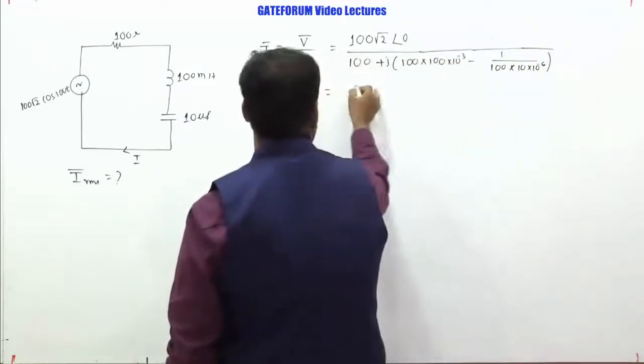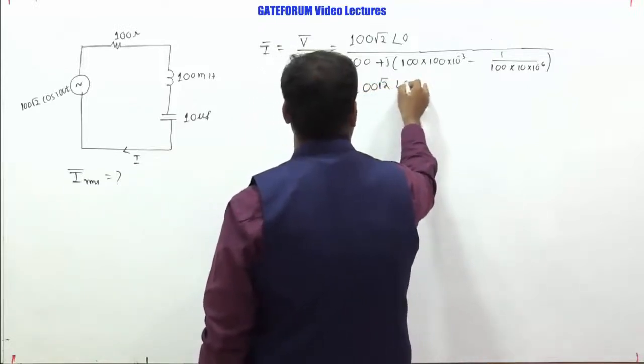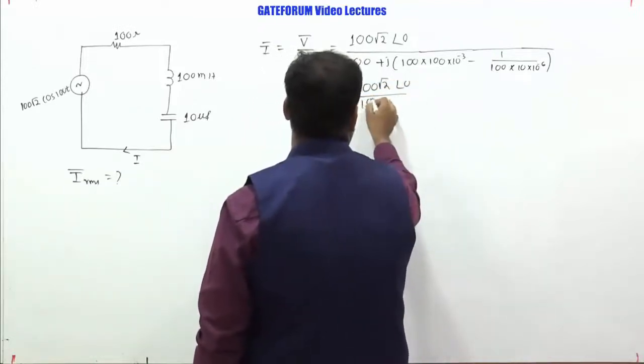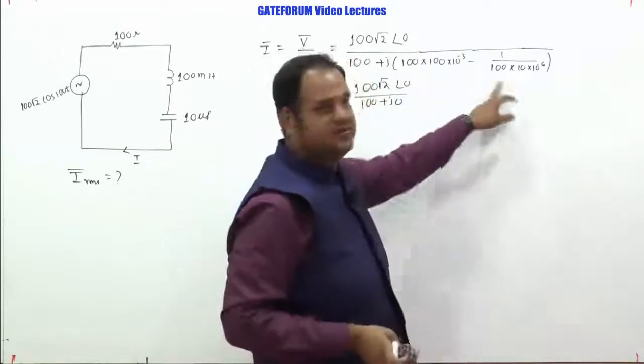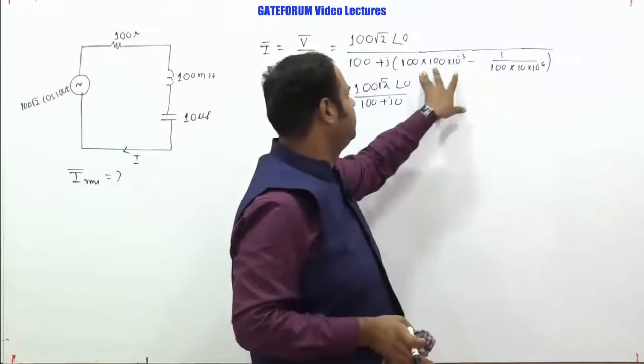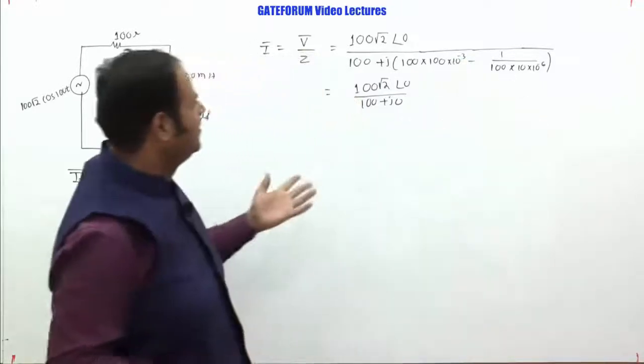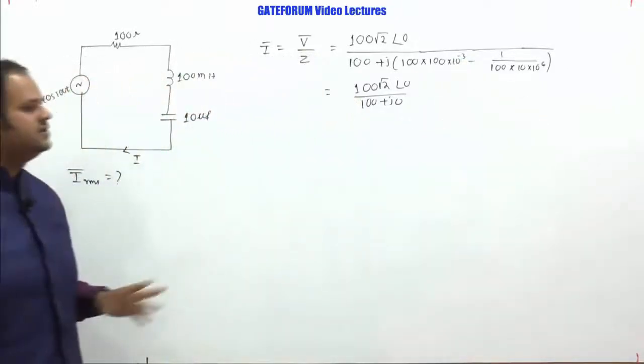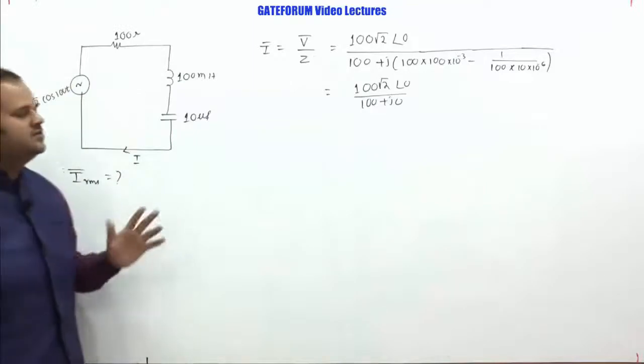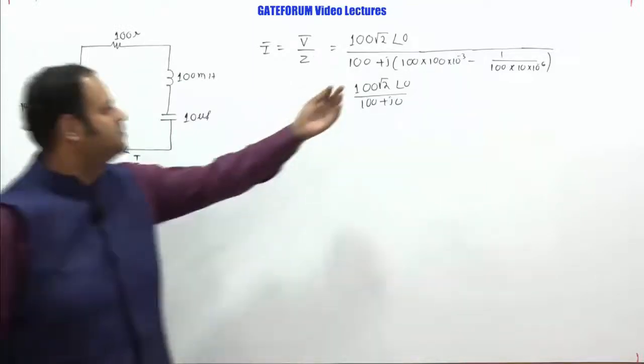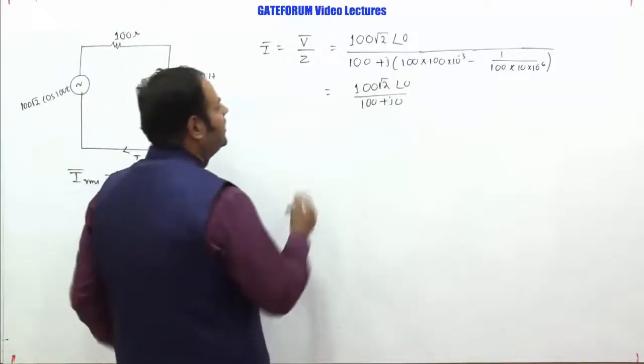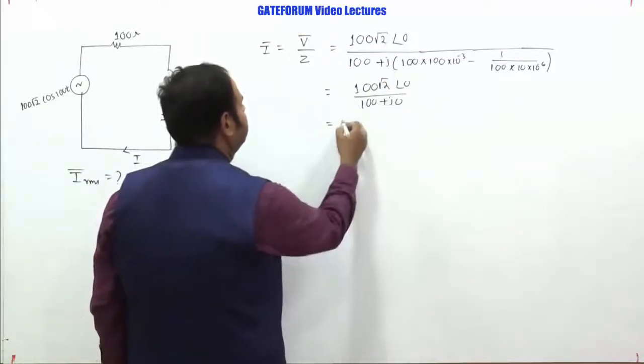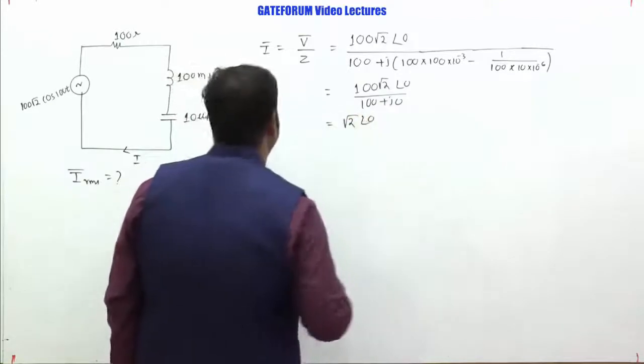Now if you see this, so this is coming 100 root 2 angle 0 divided by 100 plus j0. If you calculate and see, this term equals this term. So basically this circuit at this frequency with these component values is operating under resonance. Then only this part is going to 0. So you can either take that concept or directly calculate like this. So we are getting root 2 angle 0.